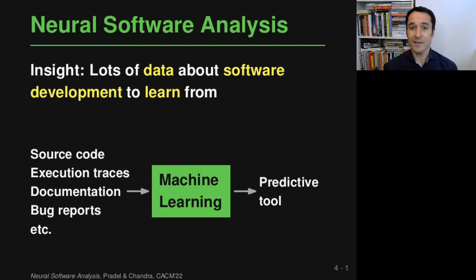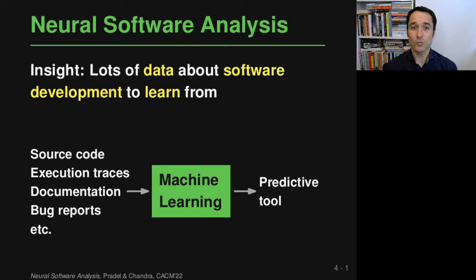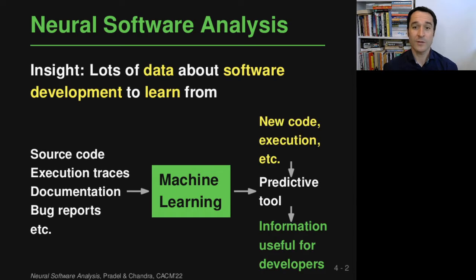The underlying insight of neural software analysis is that we actually have a lot of data about software, including a lot of source code and other artifacts, which we can learn from. The data — source code, execution traces, documentation, bug reports — is fed into a machine learning model, typically a neural network, which gives you a predictive tool. Once trained, you can give new code or new data to this tool, which hopefully provides information useful for developers.